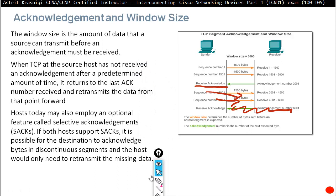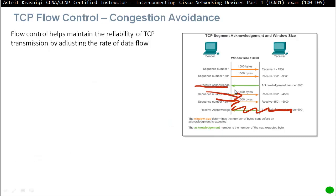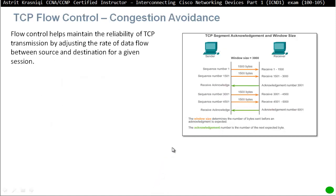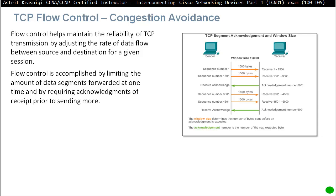Hosts may also employ an optional feature called Selective Acknowledgement, or SACK. If both hosts support SACK, the destination can acknowledge bytes in discontinuous segments and the host will only need to retransmit the missing data — for example, from 4,501 to 6,000 — rather than retransmitting from the last acknowledgement. Flow control helps maintain reliability of TCP transmission by adjusting the rate of data flow between source and destination. Flow control is accomplished by limiting the amount of data forwarded at one time and requiring acknowledgement from the recipient before sending more.